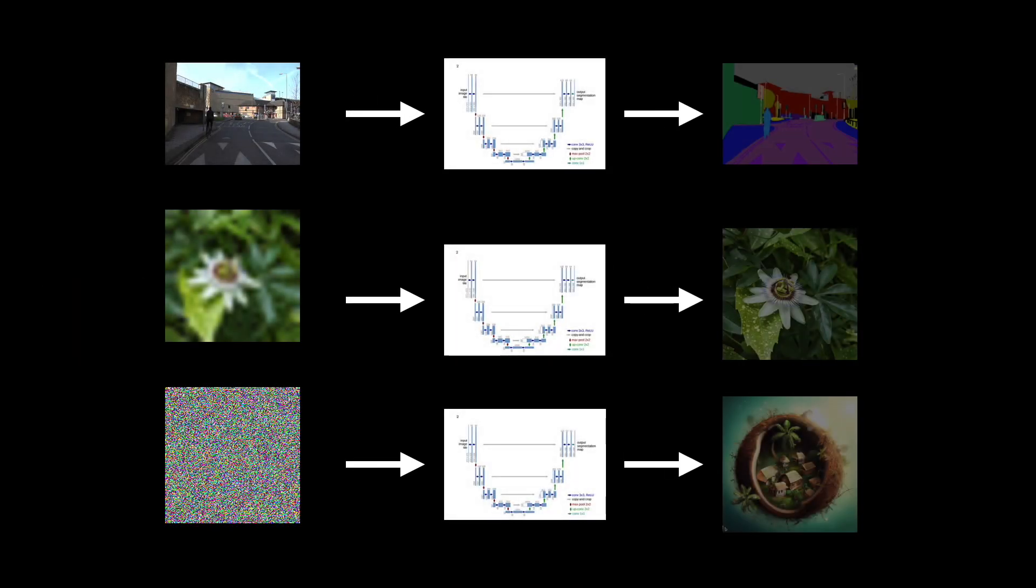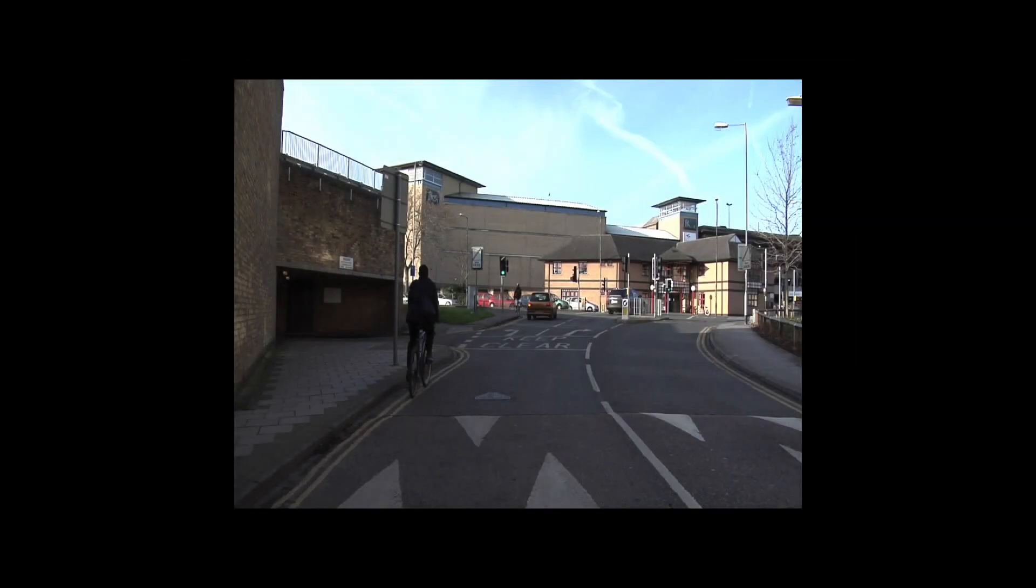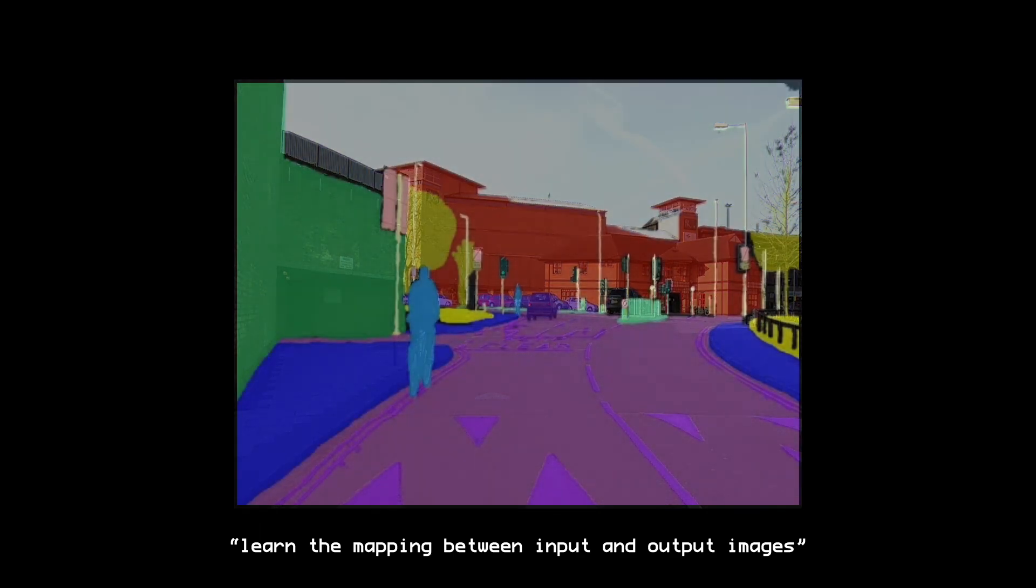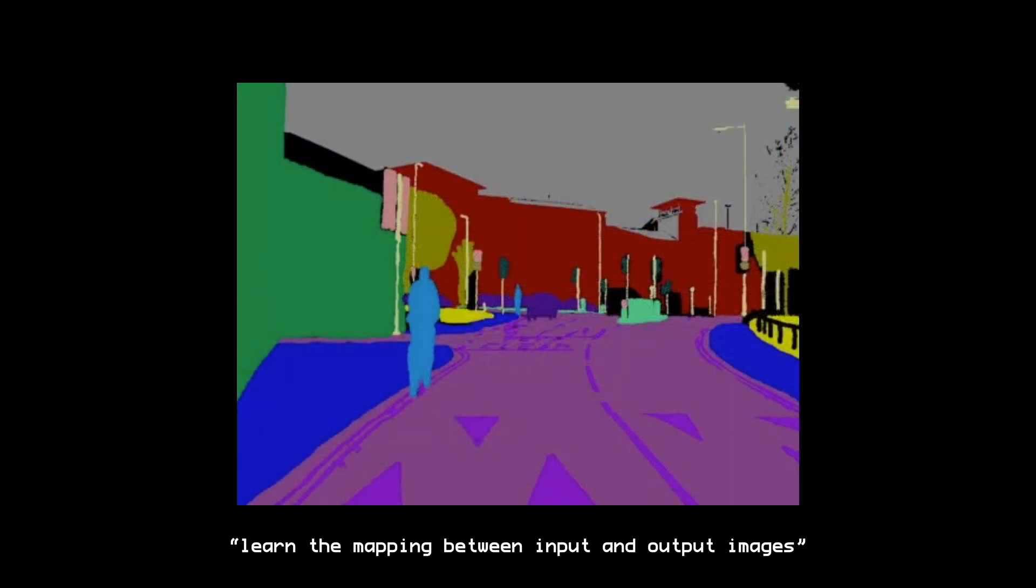As you may have noticed, all of these tasks take an image as input and produce a new image. For example, in segmentation, we are trying to learn a mapping from the pixels of an image into the pixels of a segmentation mask.